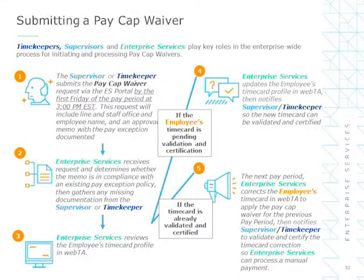Timekeepers and Enterprise Services play key roles in the enterprise-wide process for initiating and processing pay cap waivers. The supervisor or timekeeper submits the pay cap waiver request via the ES portal by the first Friday of the pay period at 3 pm ET. This request will include line and staff office, employee name, and an approval memo with the pay exception documented.